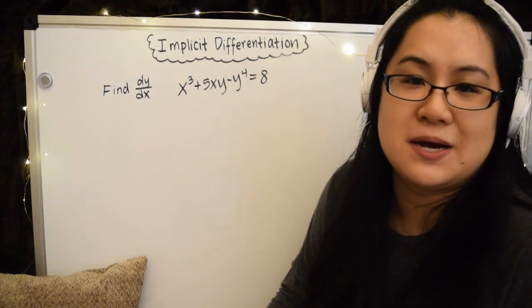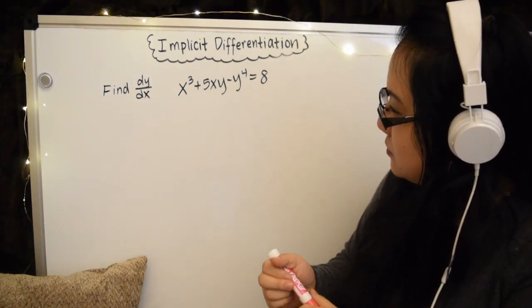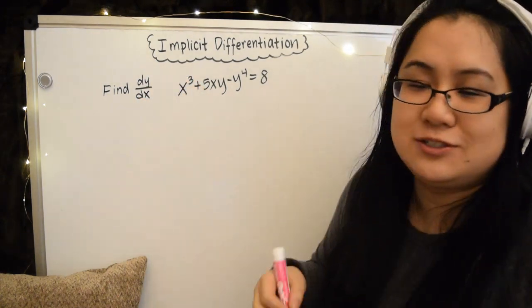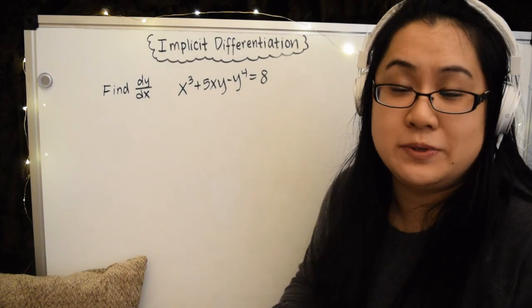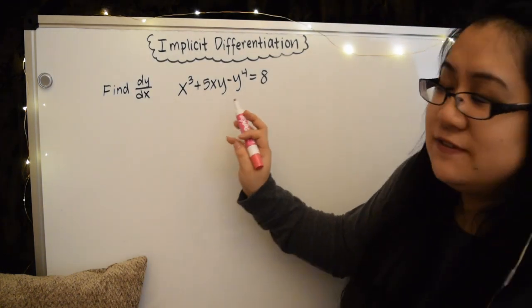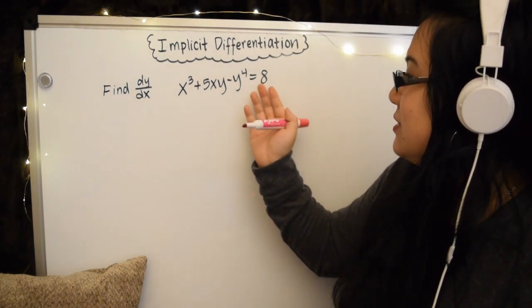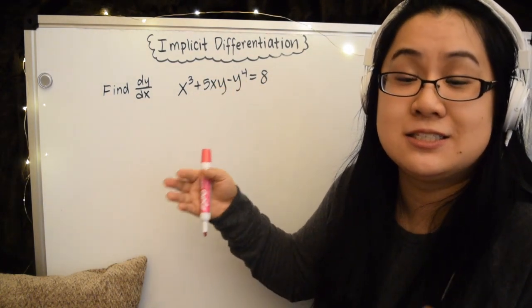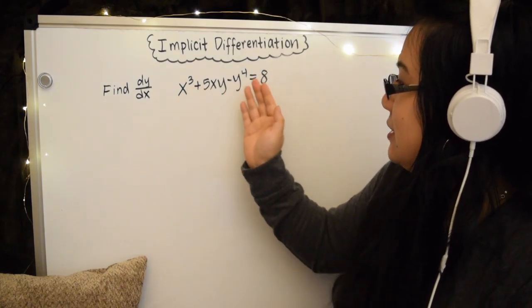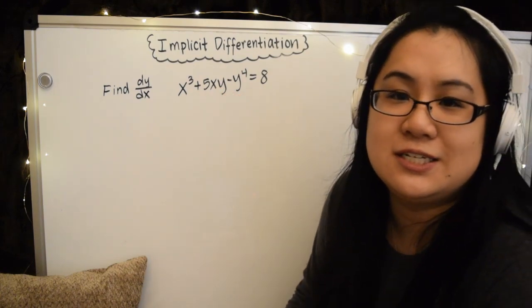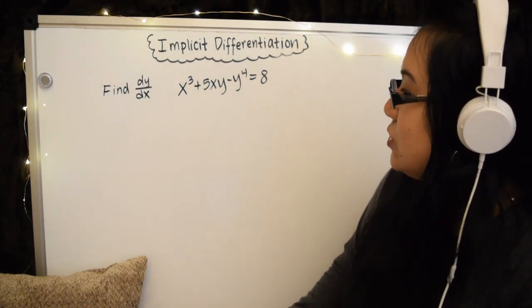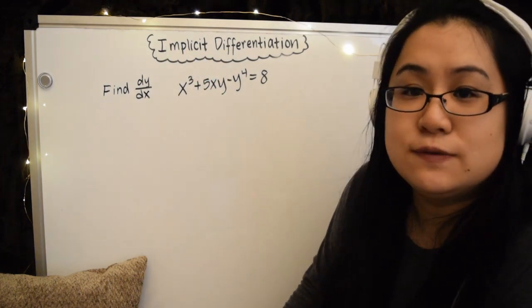We have x cubed plus 5xy minus y to the fourth equals 8. And our goal is to find dy/dx. So we're just going to look for a general expression. We're not going to find the derivative at a particular point, although we could if we wanted to.